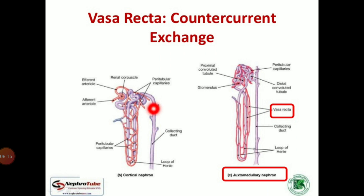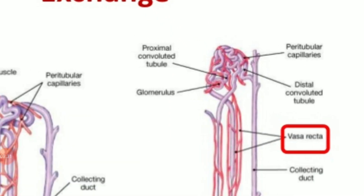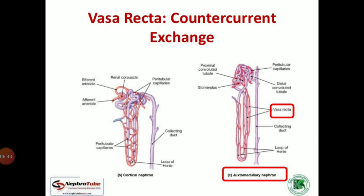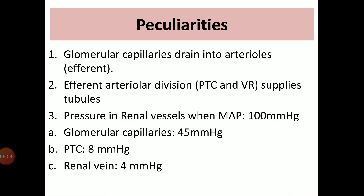In the cortical nephron, the renal tubules are supplied primarily by the peritubular capillaries. In the juxtamedullary nephron, which has a long loop of Henle, it is initially supplied from the peritubular capillary — also a division of the efferent arteriole — and later in the long loop of Henle it is supplied from the vasa recta. In this long loop of Henle, in the descending and ascending limb, the counter-current mechanism takes place so as to dilute or concentrate the urine as per the hydration status of the individual.